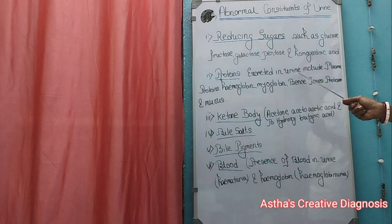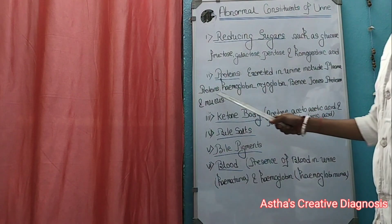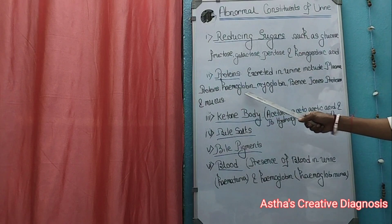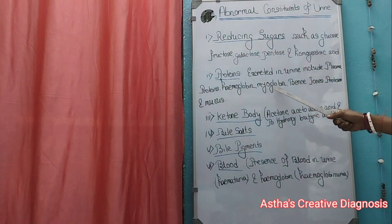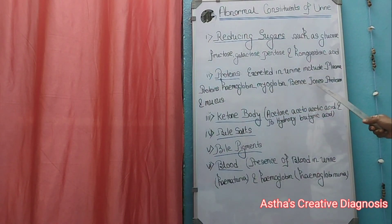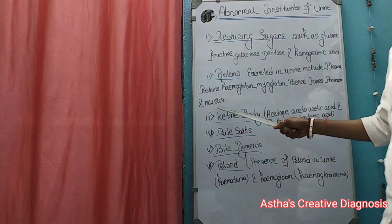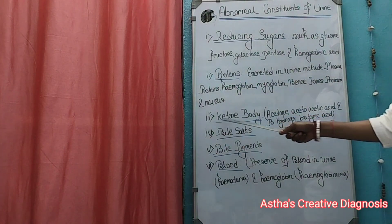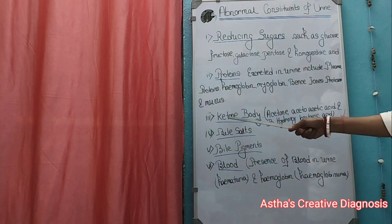Proteins excreted in urine include plasma proteins, myoglobin, hemoglobin, Bence Jones proteins, and glucoproteins. Number three: what are ketone bodies?